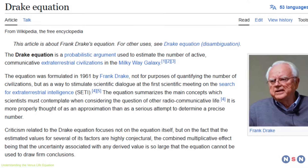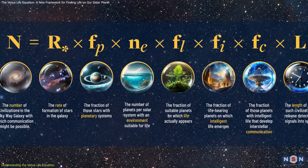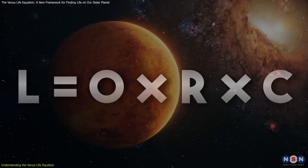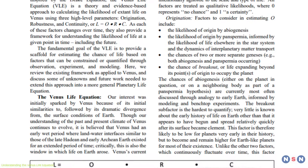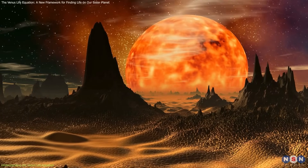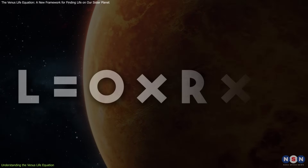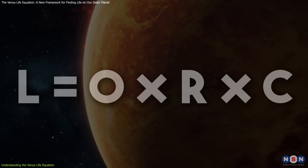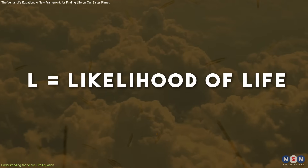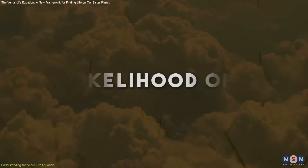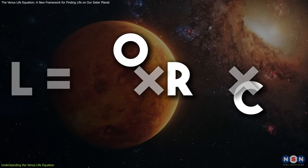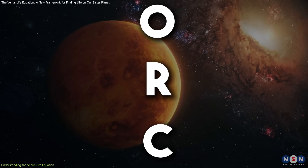Similar to the famous Drake Equation, which estimates the number of communicative extraterrestrial civilizations in our galaxy, the VLE isn't meant to give us a definitive answer. Instead, it's a framework for organizing our thinking and guiding future research about possible life on Venus. The equation itself is elegantly simple: L equals O times R times C. L represents the likelihood of life existing on Venus at any given time point, and the beauty of this equation lies in how it breaks down this complex question into three crucial parameters that scientists can actually investigate.